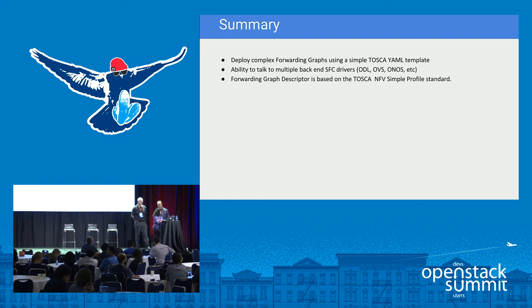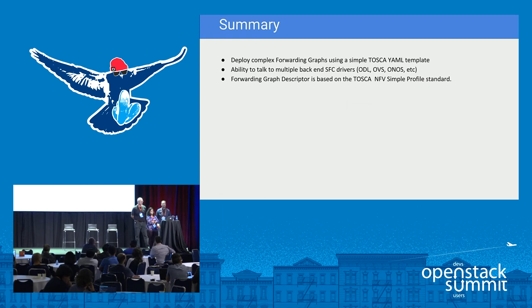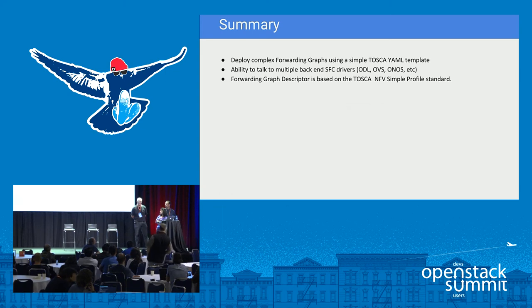A question about discontinuity between the TOSCA YAML template and the SFC APIs — is there work to align the terminology so that building a TOSCA template maps cleanly to port pairs or port chains? The response: yes, efforts to resolve those differences will be part of the Thursday networking SFC future directions meeting.